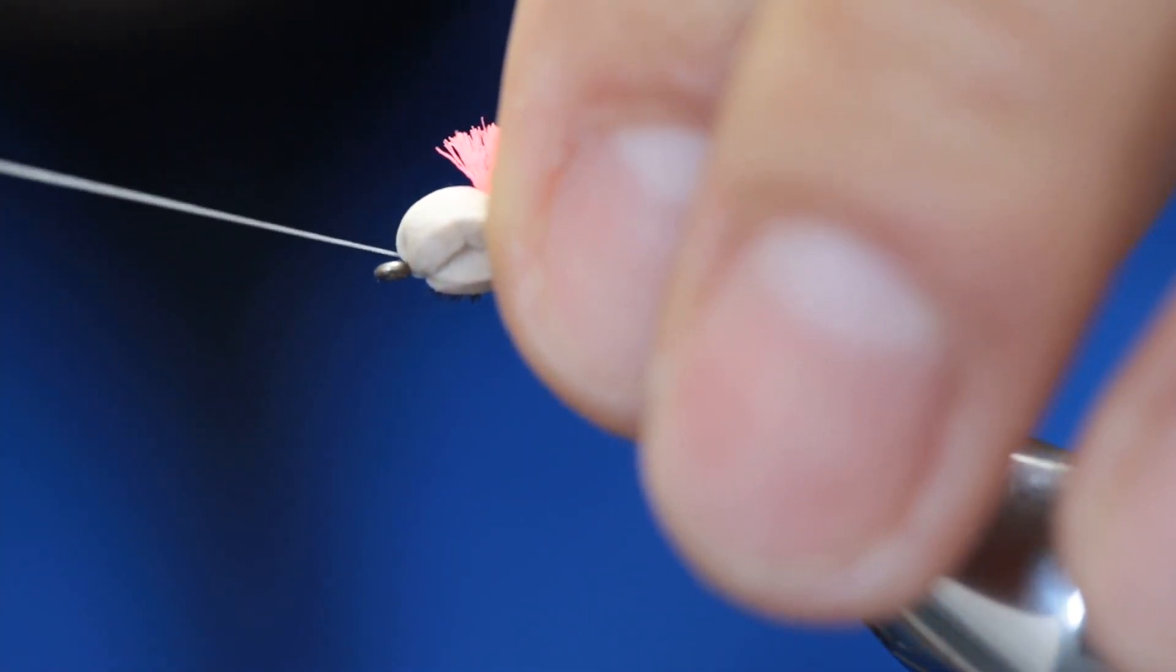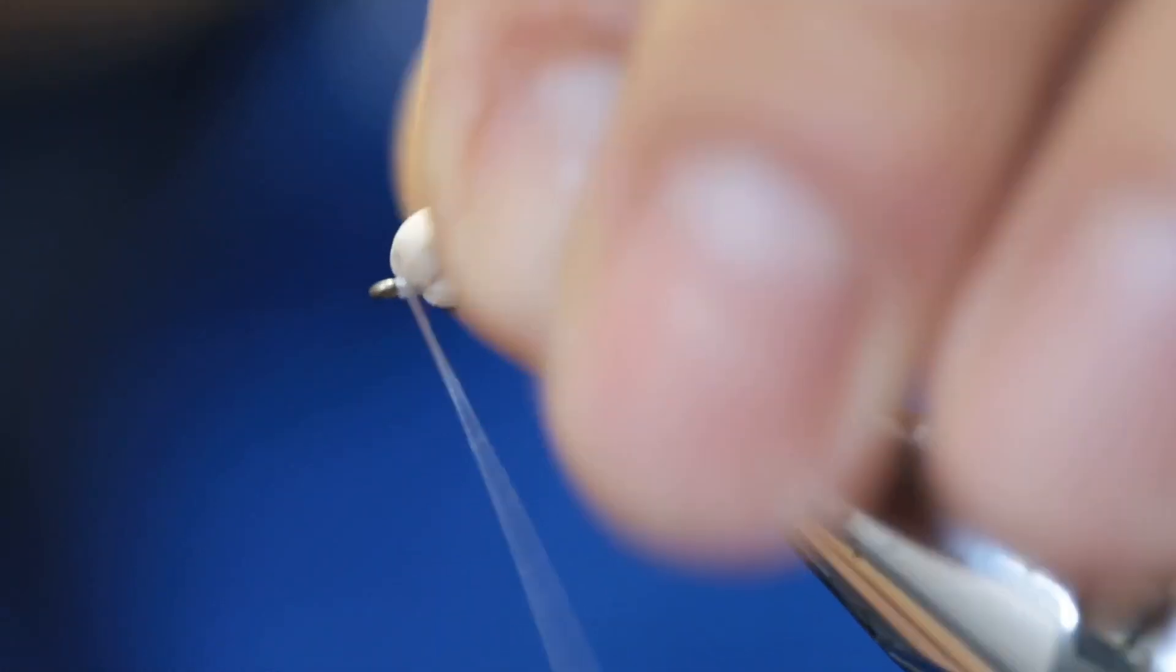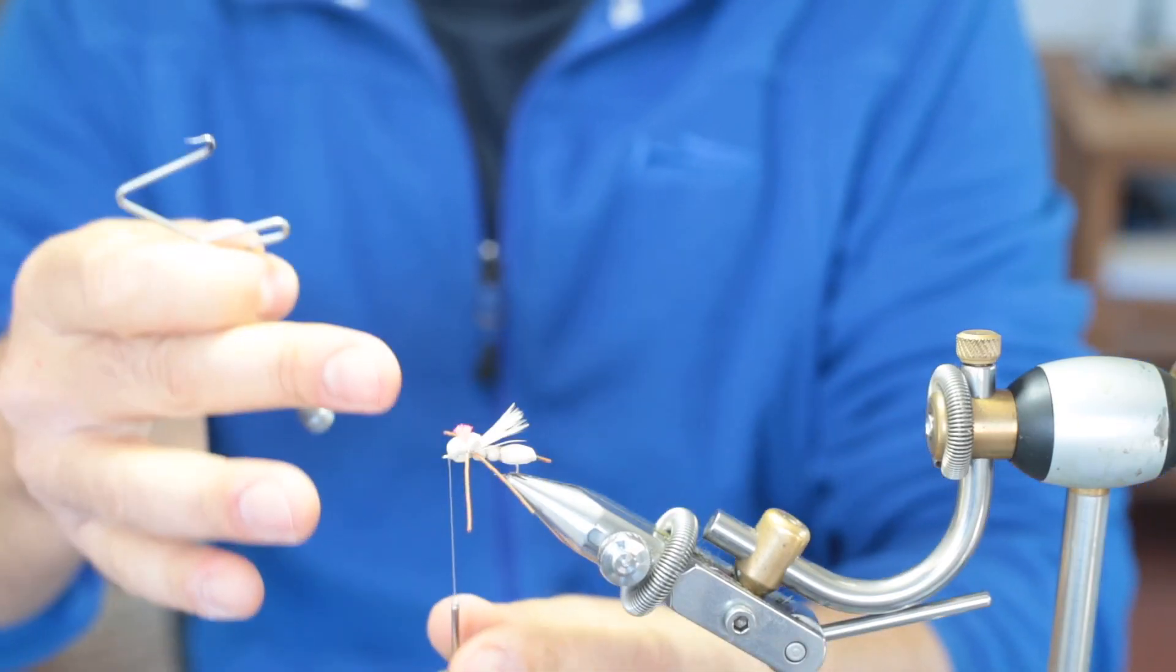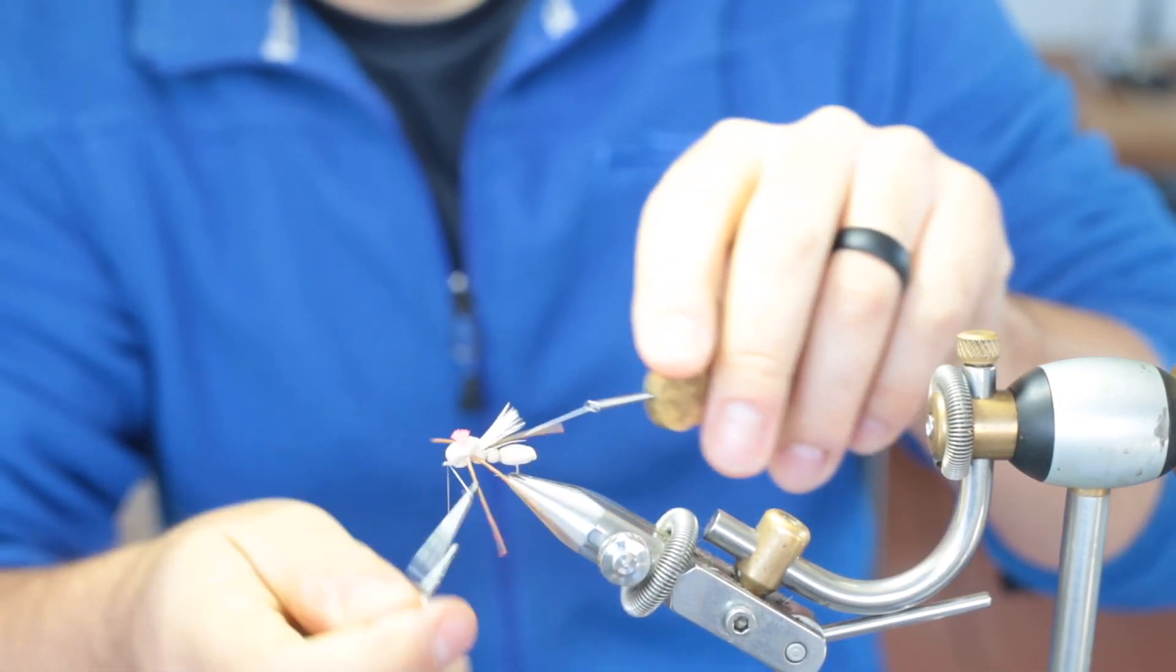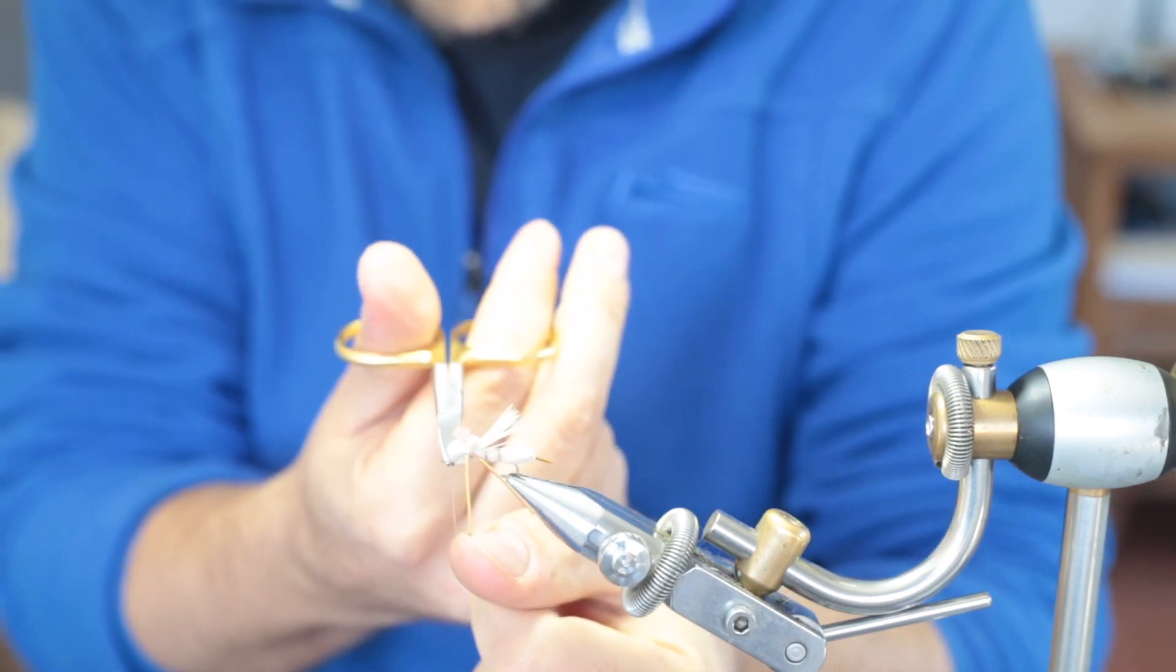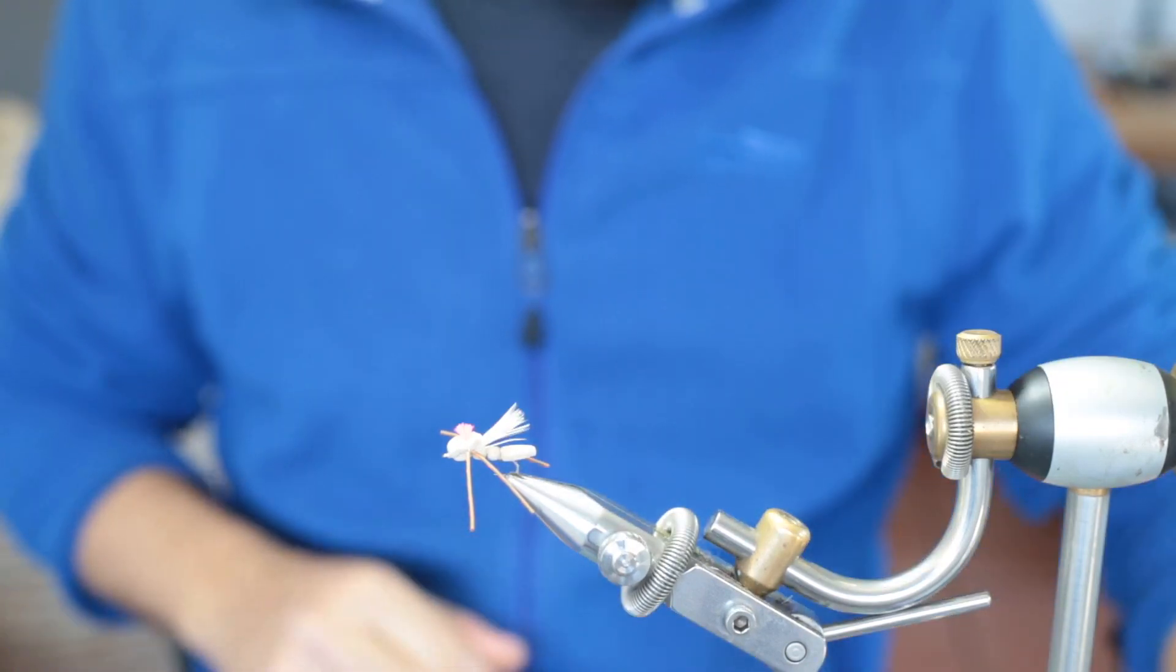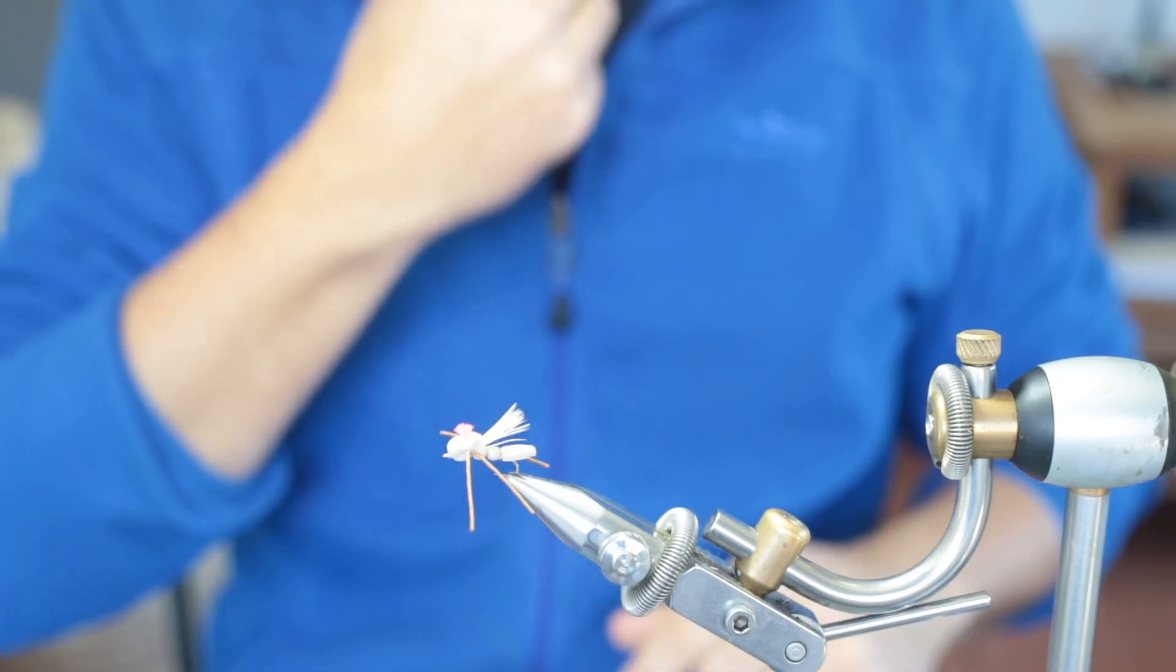Next transfer your thread forward like so and create a neat head for the fly, nothing too serious. Take your whip finishing tool and do a whip finish for the fly. Pull them up tight and cut off the thread. All the tying's done.